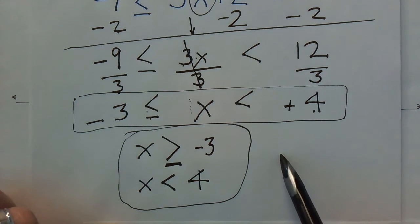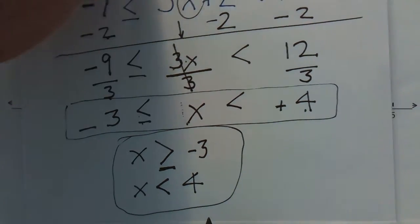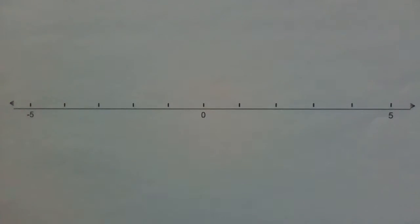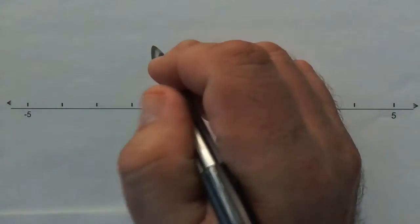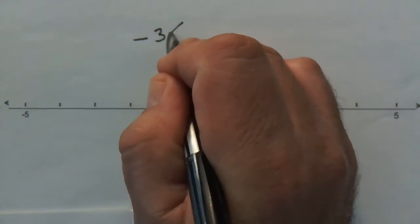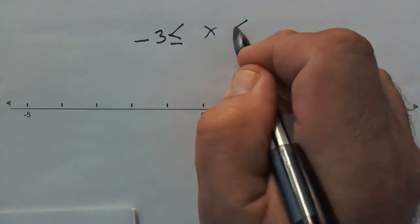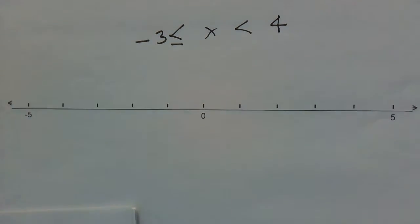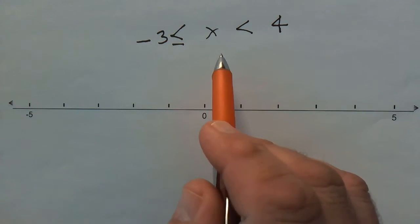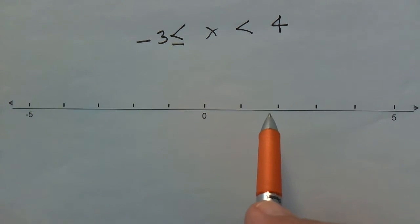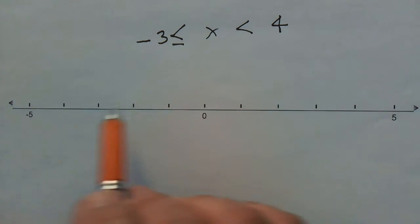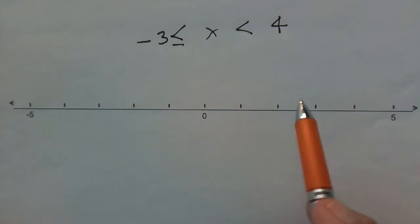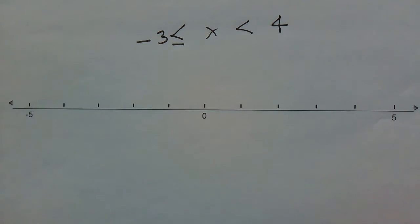We've solved it, but now we need to graph it on a number line. The solution is: negative 3 is less than or equal to x, which is less than positive 4. On the number line, the origin is 0 in the middle. It extends to negative 5 and beyond in one direction, and to positive 5 and beyond in the other. The x portion is what we'll represent with a line on the number line.